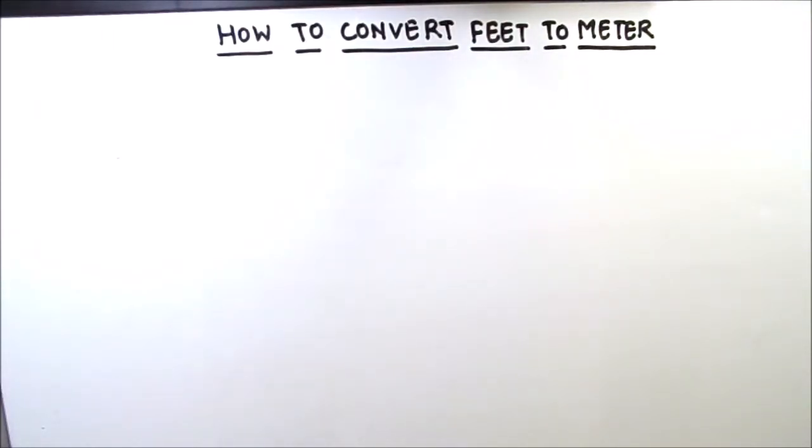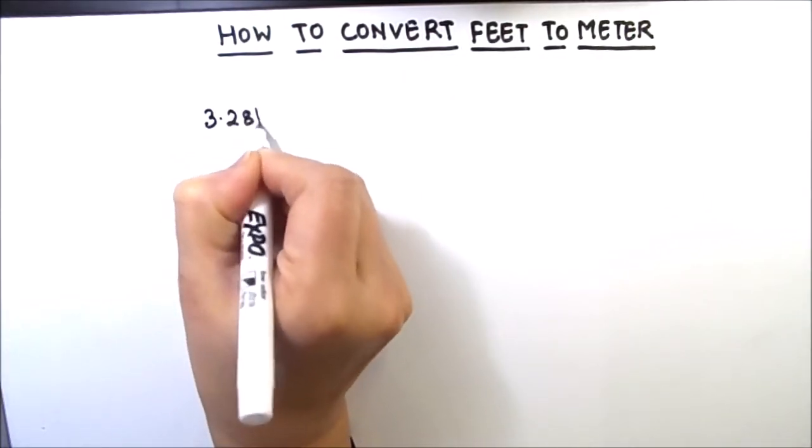Hello everyone, in this video we are going to learn how to convert feet to meter. For converting from feet to meter, we should know the basic relation between meter and feet, which is 3.281 feet is equal to 1 meter.